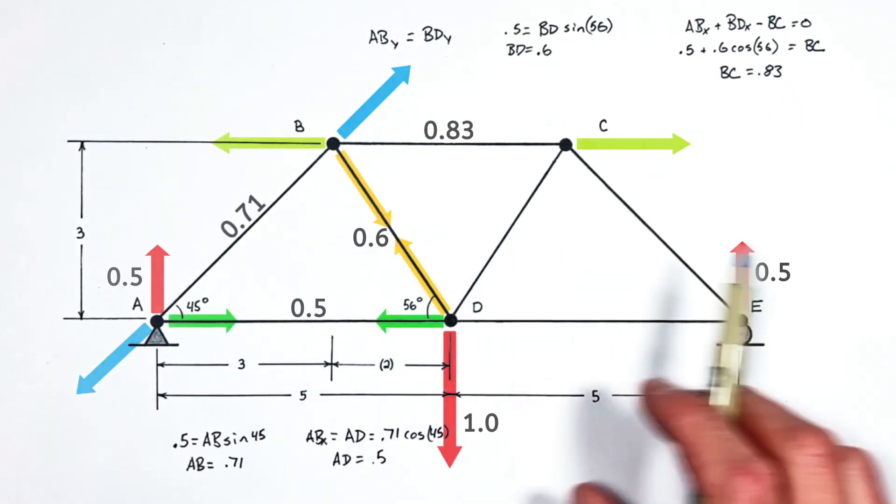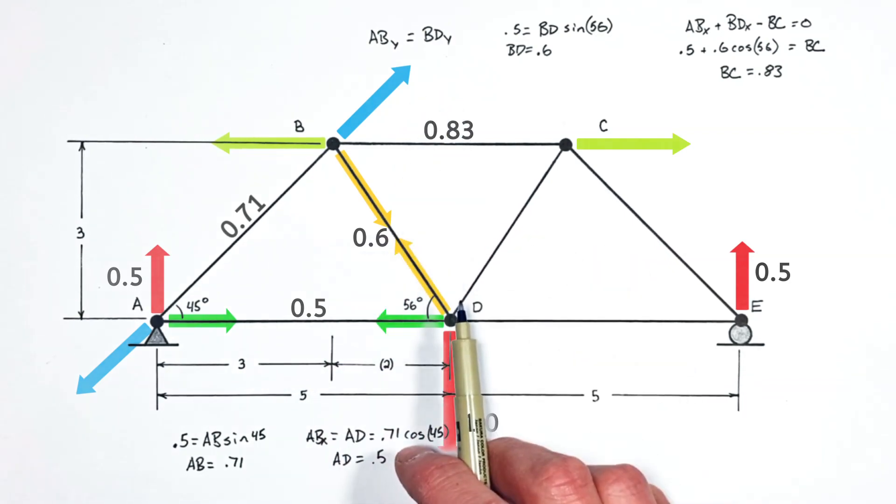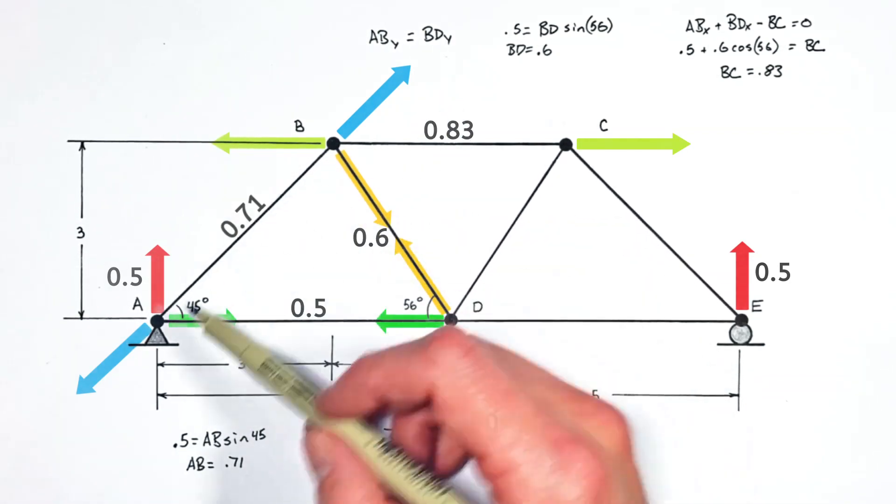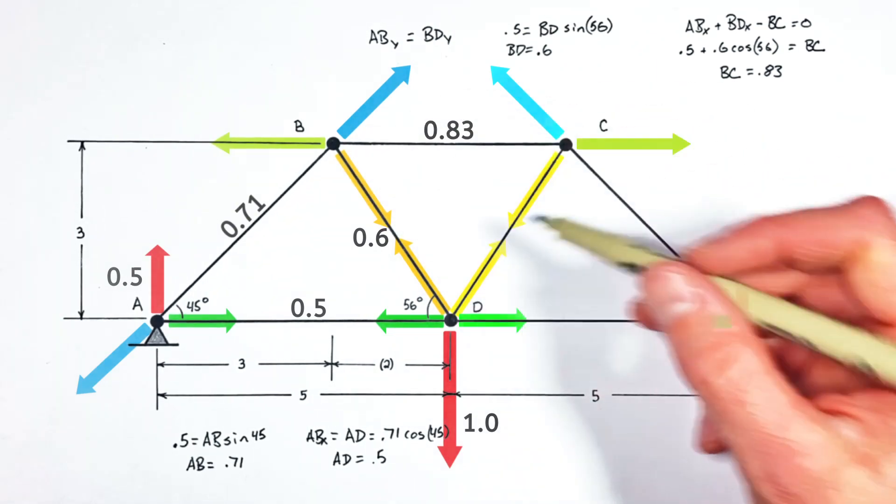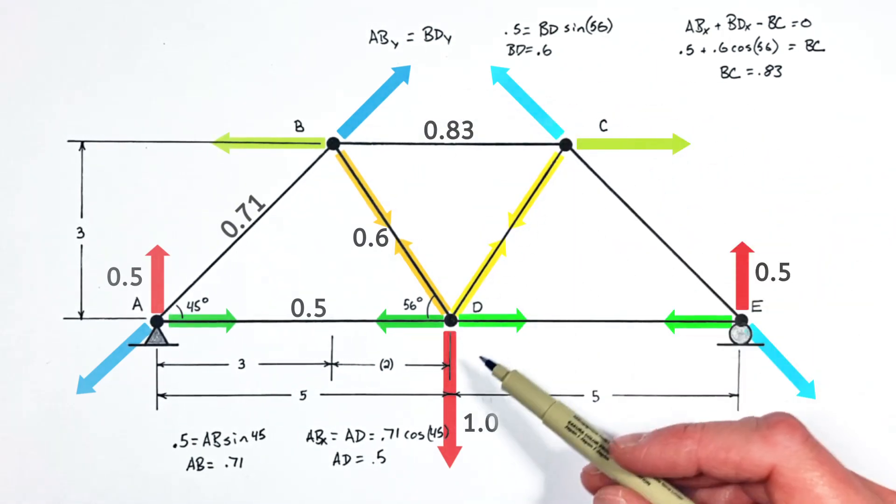Now, like I said earlier, this truss is symmetric right along its midsection, which means that whatever force is in AB is in CE, and whatever force is in BD is going to be in beam CD. So, we've really already done the calculations for the right side of this truss.